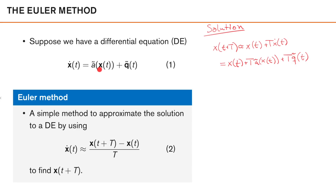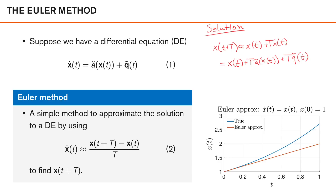A nice property of this solution is that we can almost always find an approximate discrete model using this method, even in those occasions when the original differential equation is nonlinear and possibly intractable to solve exactly. Using this technique, we at least get one approximative model that we can use in the time discrete domain. To get a more hands-on feeling for Euler's method, here is a simple scalar example.